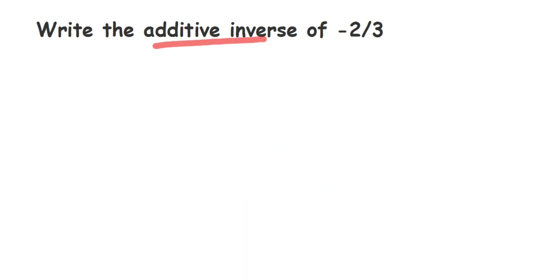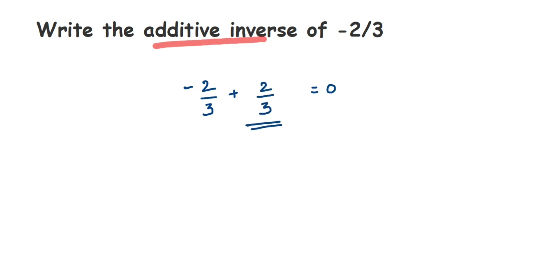Now let's find the additive inverse of minus 2 by 3. With minus 2 by 3, what should we add to get the answer 0? We know it is 2 by 3 — we have a negative sign, so we take the positive number 2 by 3. Therefore, 2 by 3 is the additive inverse of minus 2 by 3.